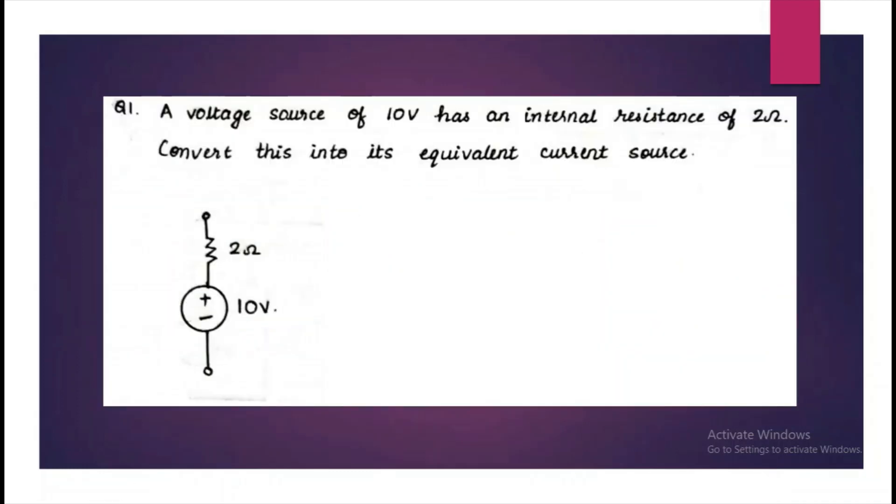In order to understand this concept better, we can do a problem. The question is that a voltage source of 10 V has an internal resistance of 2 Ohm. Convert this into its equivalent current source. Since it is a voltage source, we have to draw the resistance 2 Ohm in series with it.